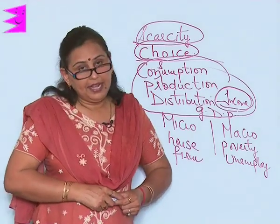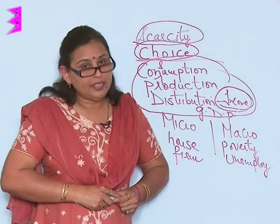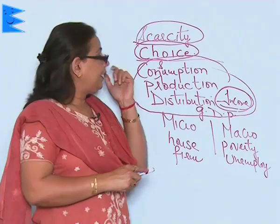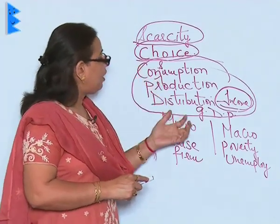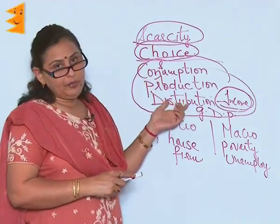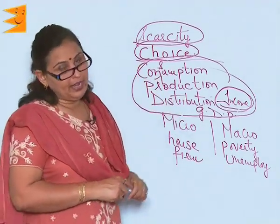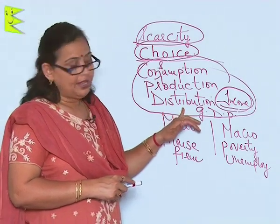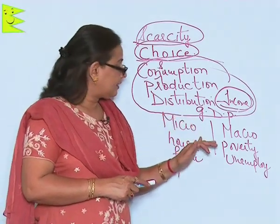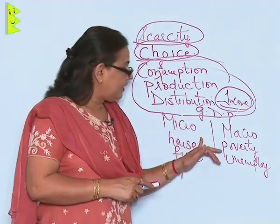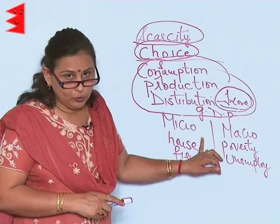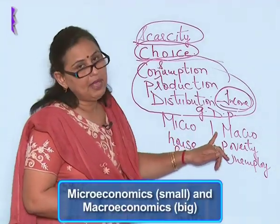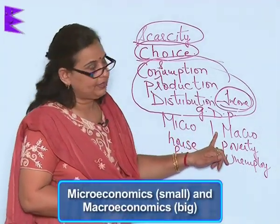But there are certain socially significant factors which cannot be calculated in these three areas, and thus the study of economics is divided into two: microeconomics and macroeconomics.